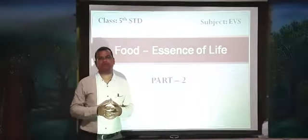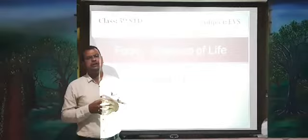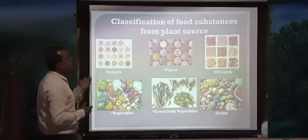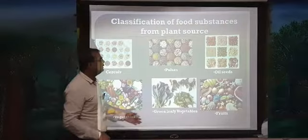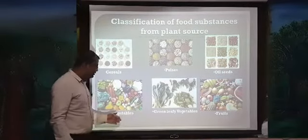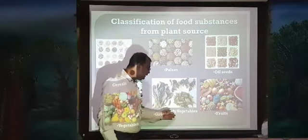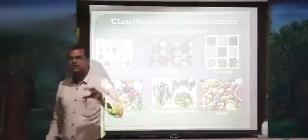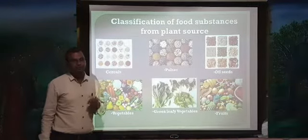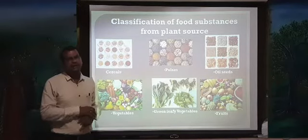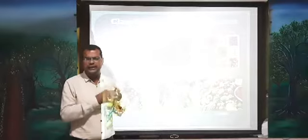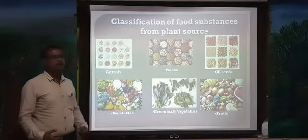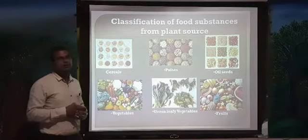Of the food items we take in our daily life, most of the food we eat comes from plants. Food items we get from plants are classified into different categories: cereals, pulses, oil seeds, vegetables, green leafy vegetables, and fruits. Food items from animal sources include milk, fish, meat, and milk products.